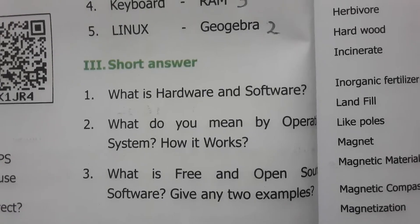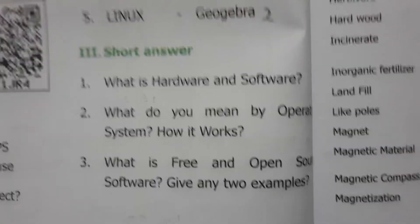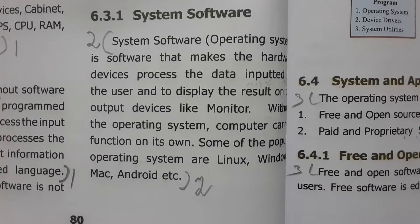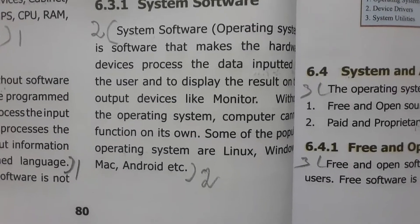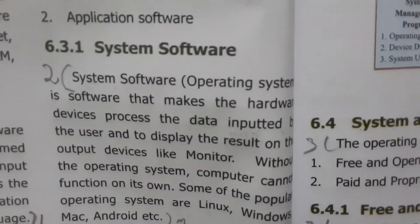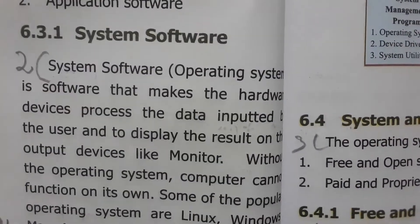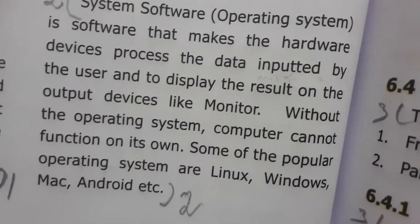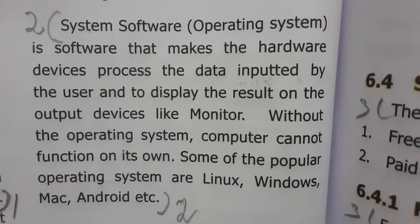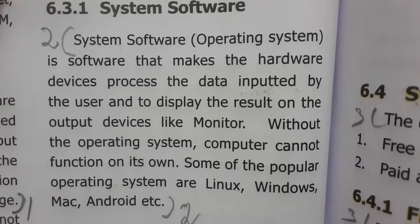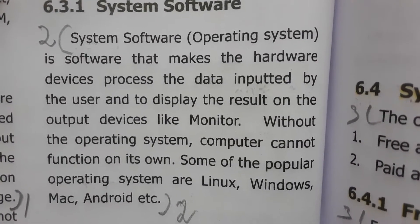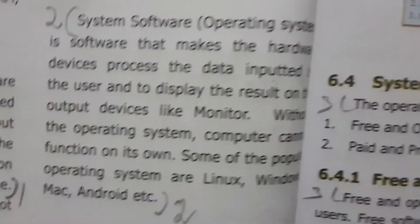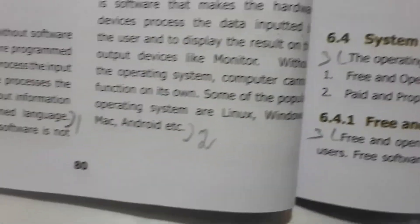Second question: What do you mean by operating system and how it works? System software, or operating system, is software that makes the hardware devices process the data inputted by the user and display the result on output devices like a monitor. Without the operating system, the computer cannot function on its own. Some popular operating systems are Linux, Windows, Mac, Android, etc.